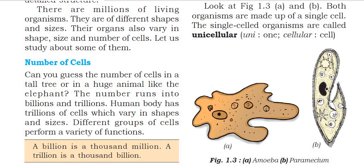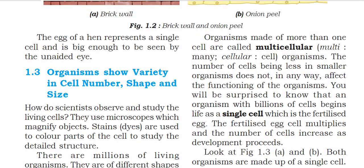Not all organisms have billions and trillions of cells. Some organisms have billions and trillions of cells, while some organisms have only a single cell. Based on the number of cells present in the organism, we can divide organisms into multicellular and unicellular organisms.